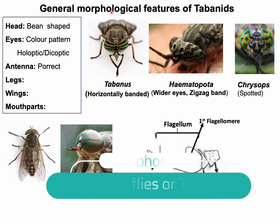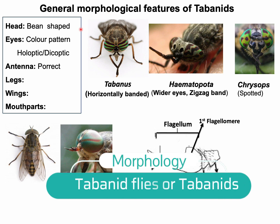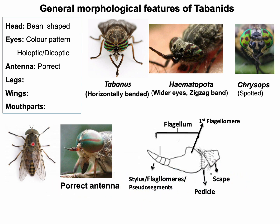Tabanids are the largest flies, having a very stout body. The head is larger, being broader than long. They have very well-developed eyes, which are comparatively wider in Haematopota. In live specimens, brilliantly colored patterns can be seen: a unicolor horizontal band is seen in Tabanus species, a zigzag band in Haematopota, and spotted eyes in Chrysops species. Remember that this eye color disappears after death.